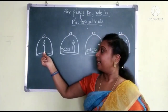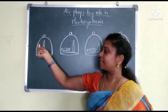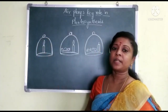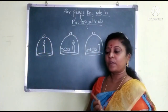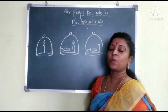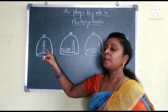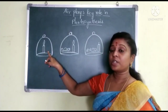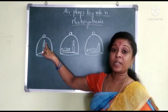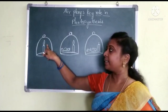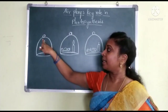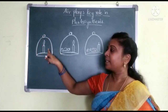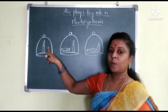First of all, we take a candle, light it, and close a bell jar on it. After some time, what will happen? The candle's burning stops — because for burning, it needs air. When the bell jar is closed on it, the gas is absent inside, so the candle stops burning.